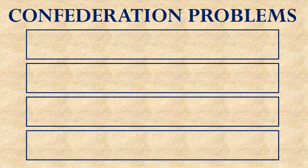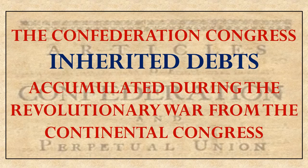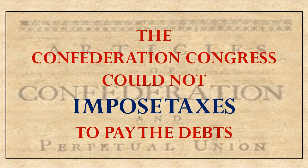What sort of problems did they have under the Articles of Confederation? Why did the Articles of Confederation only last eight years and then eventually be replaced by the United States Constitution? The first problem was that the Articles of Confederation Congress inherited debts that had been run up by the Continental Congress in fighting the American Revolution.